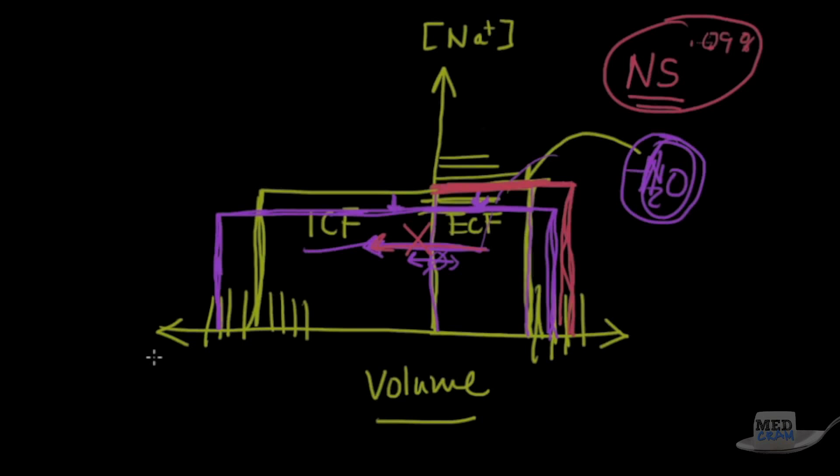So with these basics, we're going to move on and talk about the different types of hyponatremia: the isotonic hyponatremia, the hypertonic hyponatremia, and the hypotonic hyponatremia. We'll talk about those in the next lecture. Thanks for joining us.